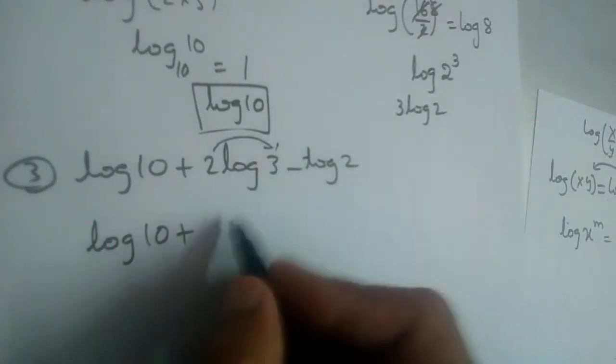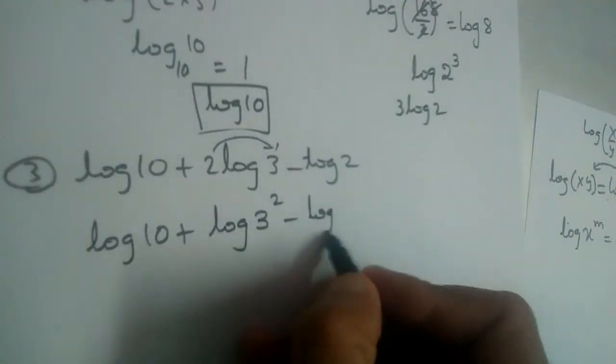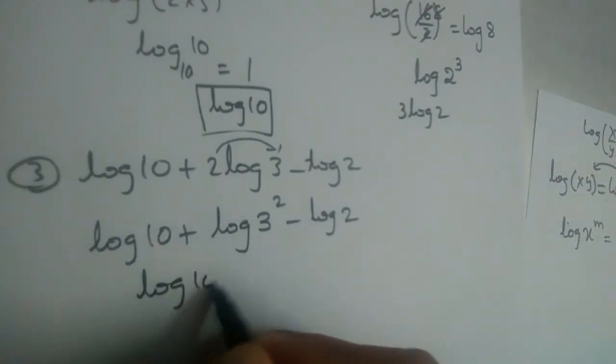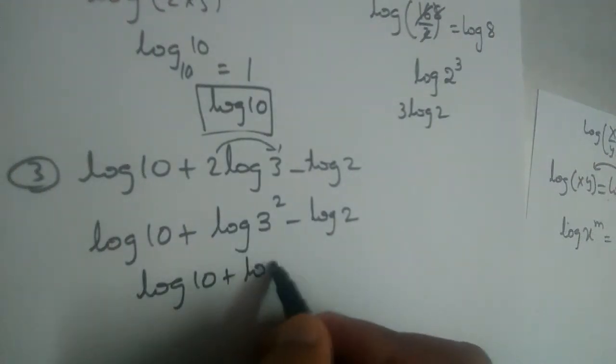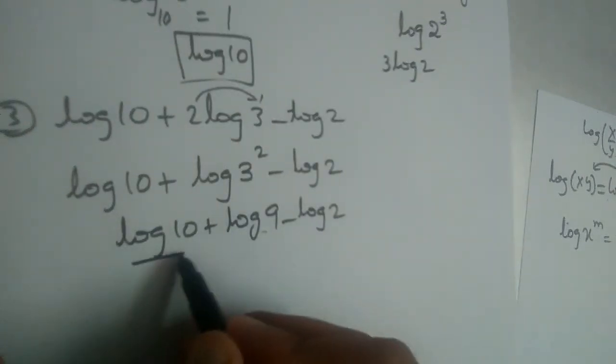So it will become log 3 square minus log 2. And let us write this as log 10 plus 3 square is 9, right? So log 9 minus log 2.